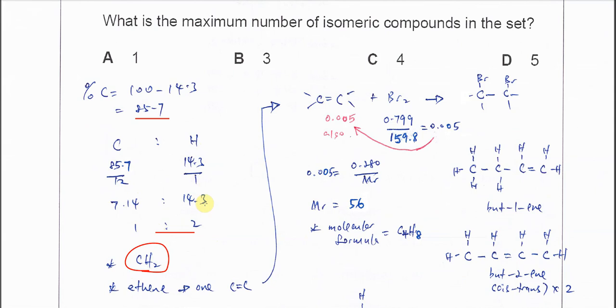We know this compound must have at least two carbons. It's not necessarily ethene, but it must have one C=C double bond.